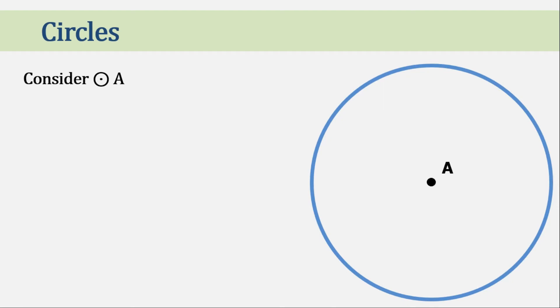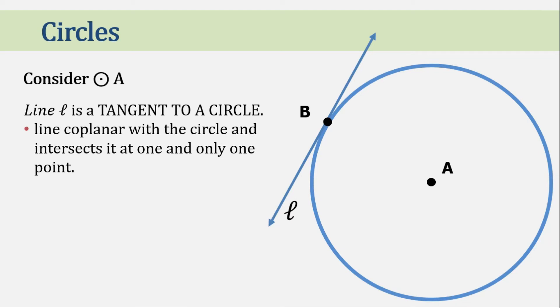Again, let's consider point A and pop up another point. Let's call this point B. Now imagine that there's a line that passes through this point at only one point of the circle. This line, let's name this line L. Now this line is a line tangent to a circle. A line coplanar to a circle that intersects at only one point.